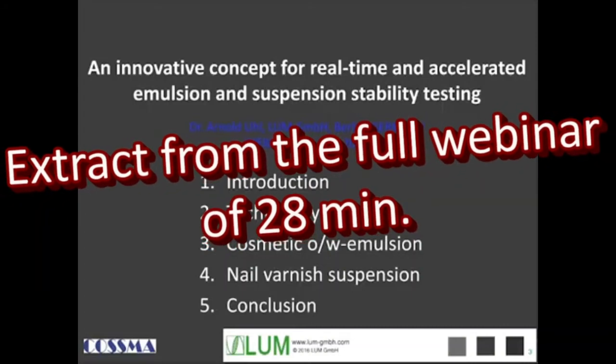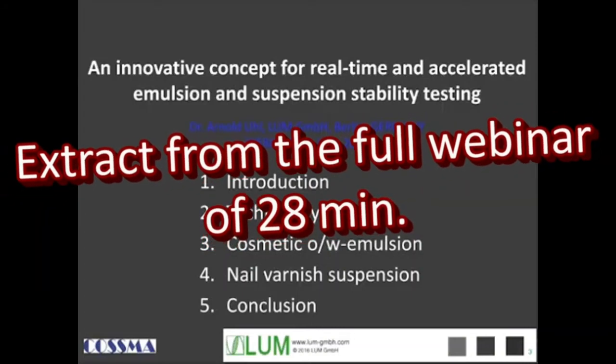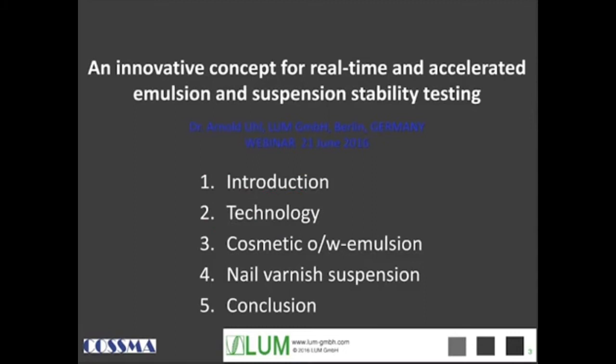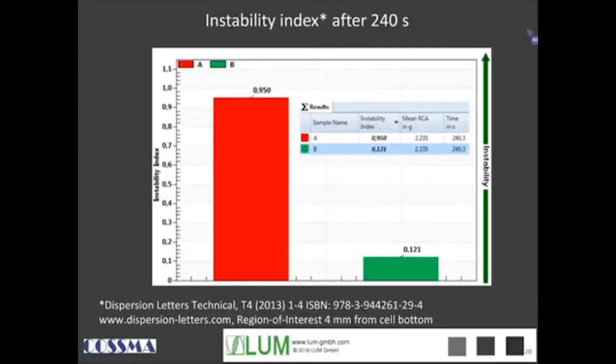We will discuss two examples: a cosmetic oil and water emulsion, and a nail varnish suspension, where this technology is applied. A lot of information concerning accelerated stability testing is obtained and how to quantify it. First, we start with an easy quantification for QC purposes.